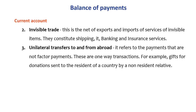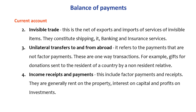The third component of the current account is unilateral transfers to and from abroad. These refer to payments that are not factor payments — they are one-way transactions, either coming from outside the country or going from our country. Examples include gifts or donations sent to a resident of a country by a non-resident relative.